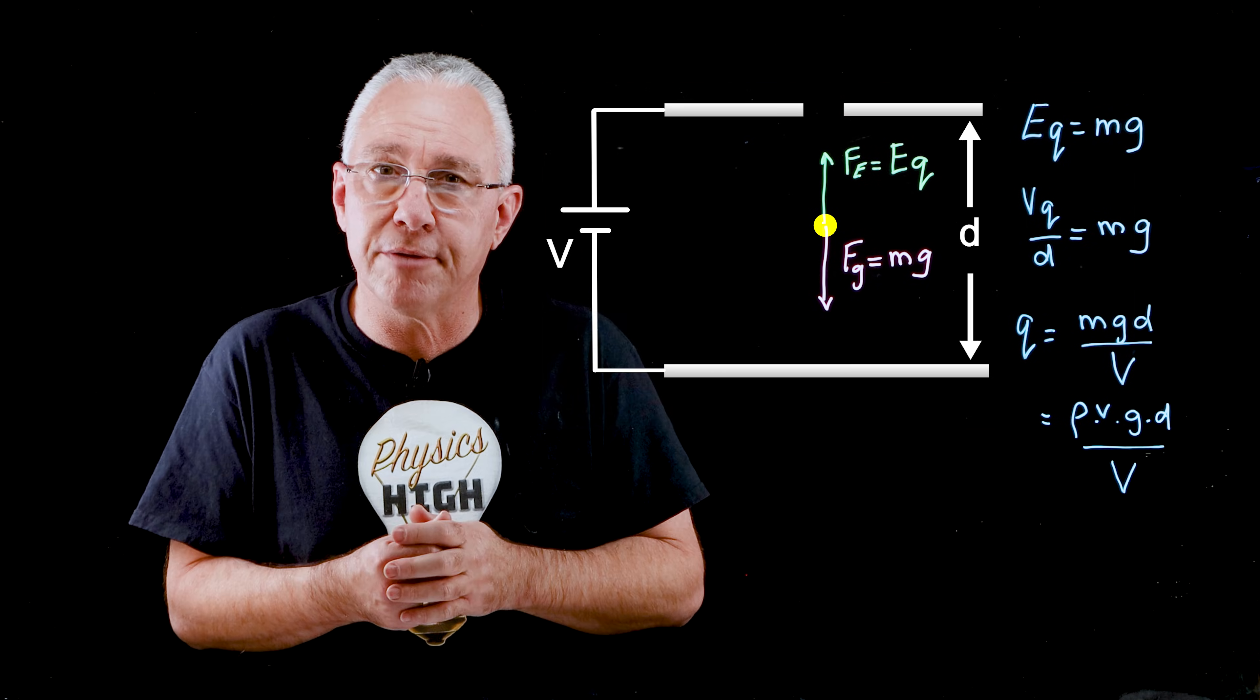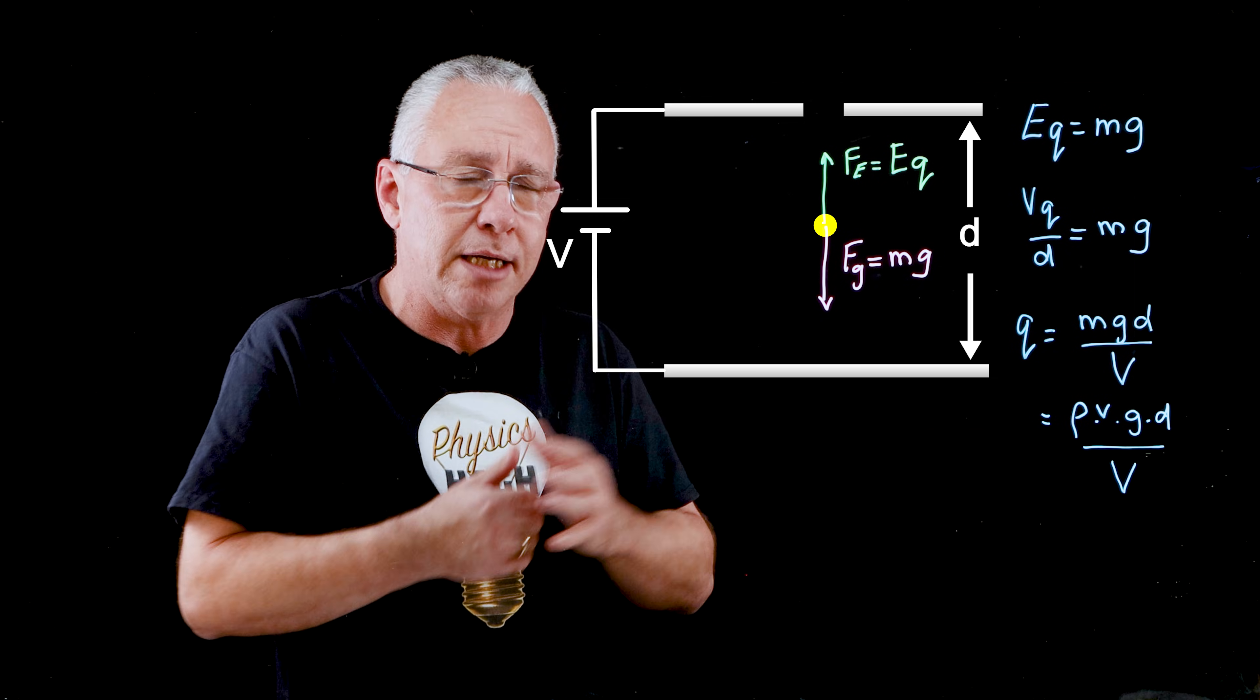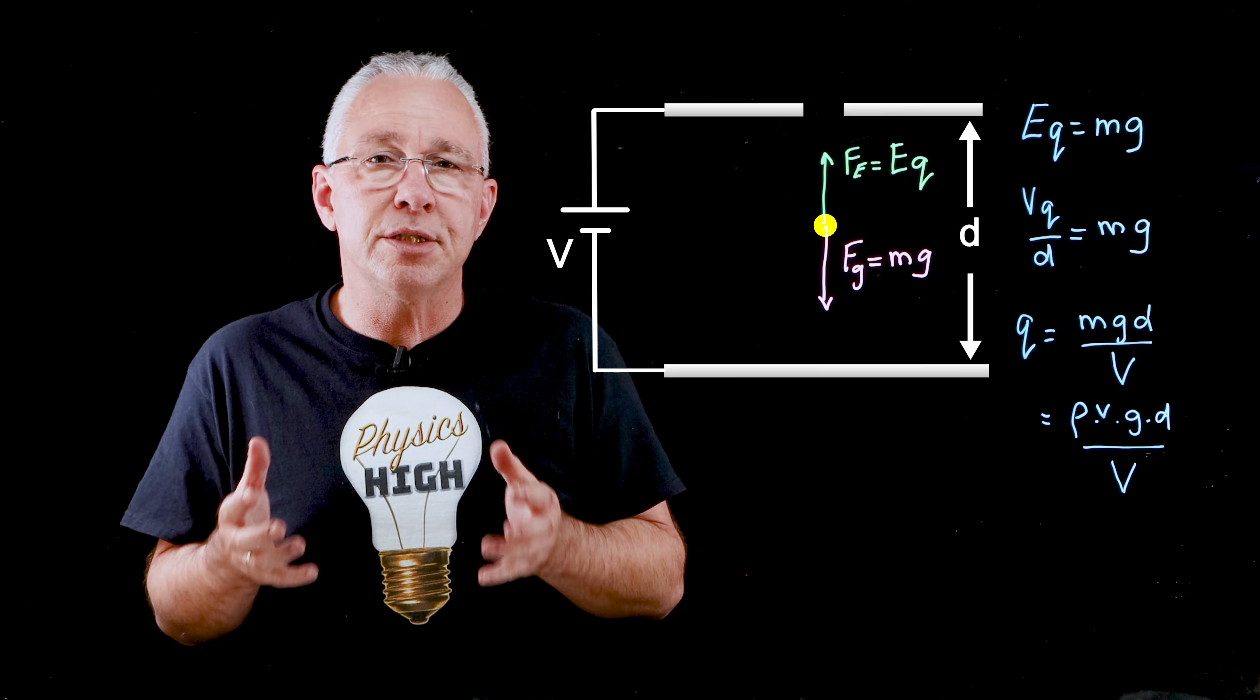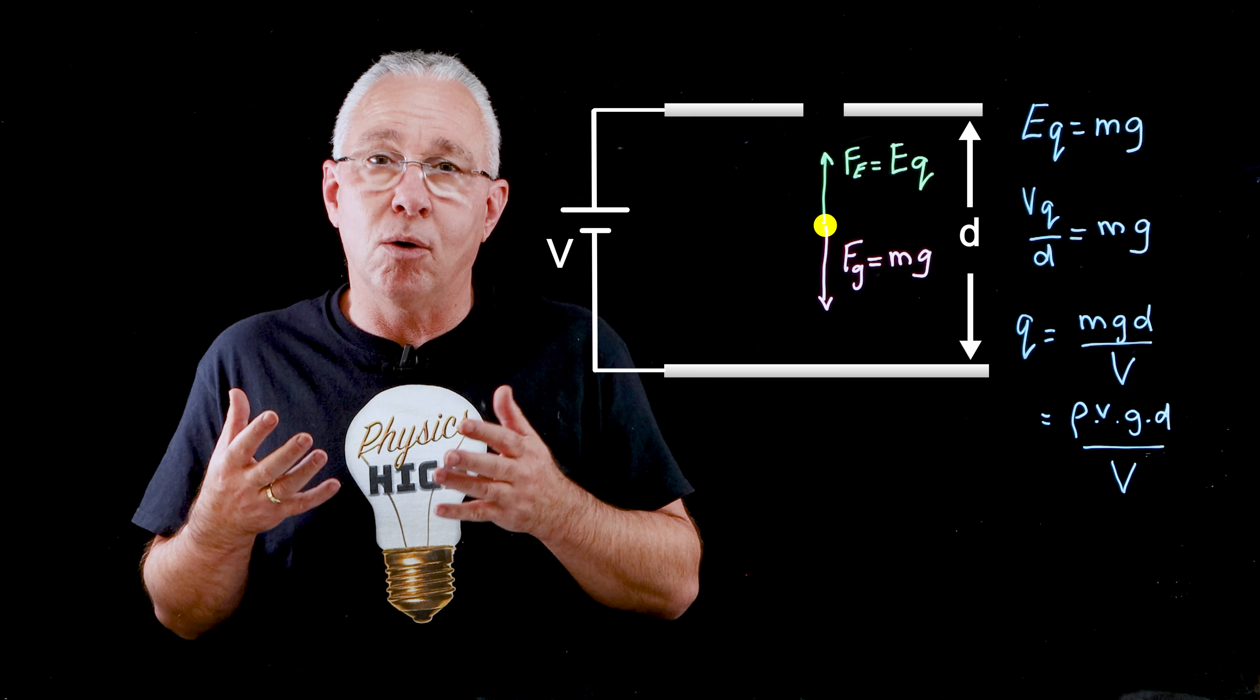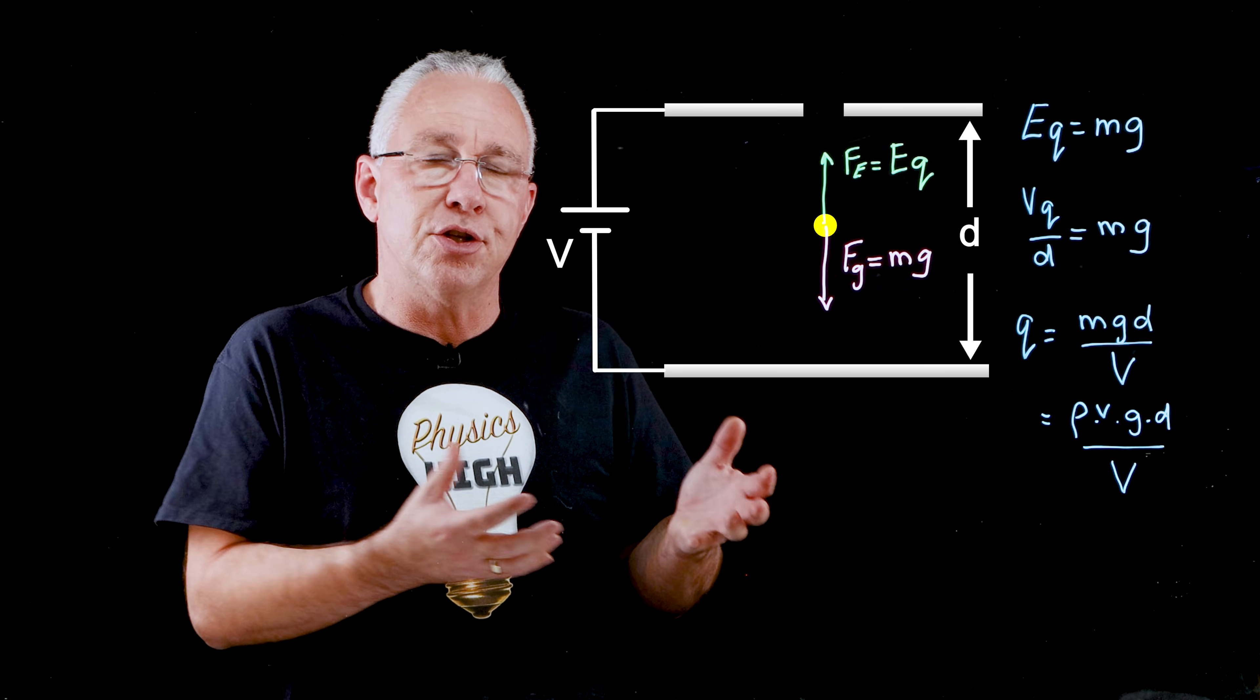Now he did this thousands of times to get 175 suitable data points. And what he noted was that each of the values of the charges of the oil drops that he measured were all multiples of a certain value.